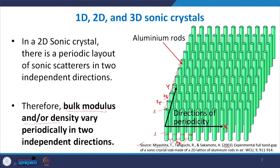The period — the distance along which the material properties repeat — depends on what is the diameter of the rod and the spacing between the rods. So we get two independent directions for periodic variation, and the periods may be different.